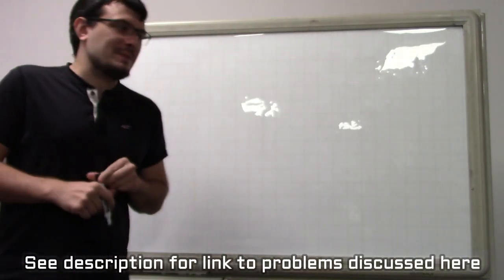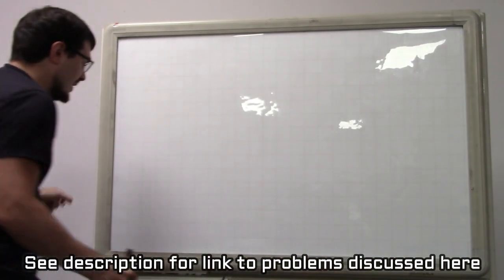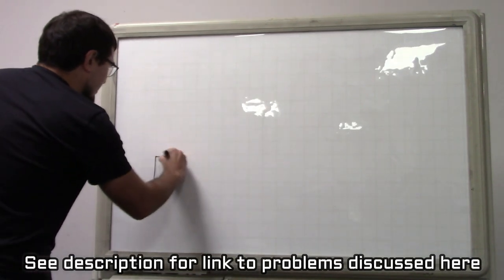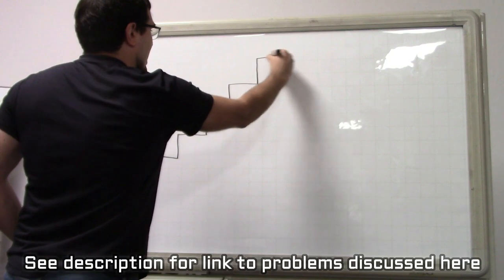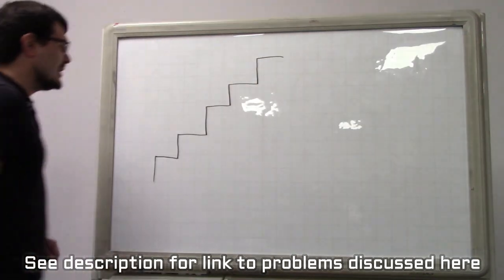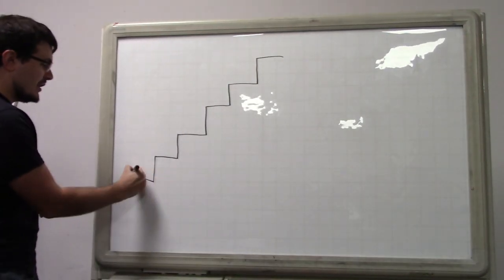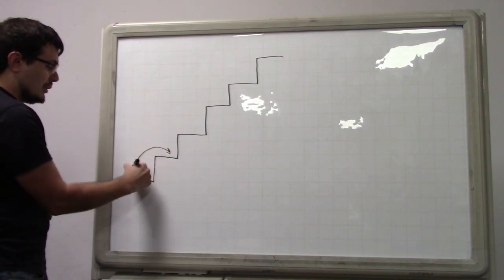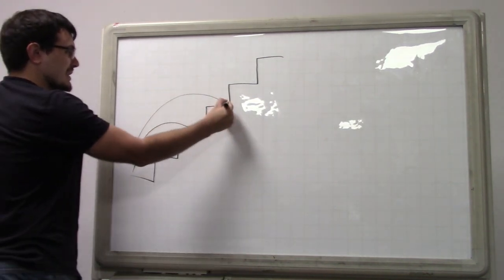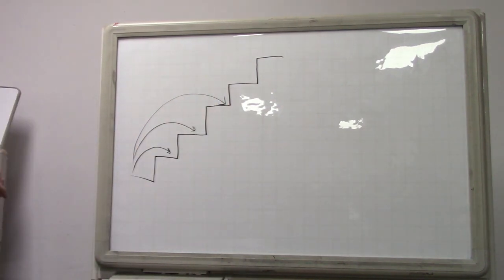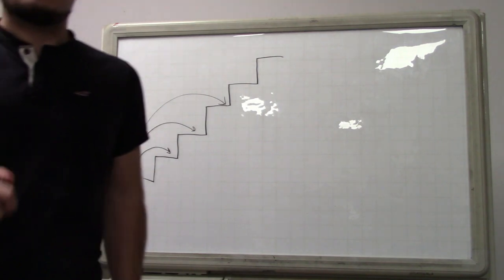The first problem is basically: there's a staircase, and you can climb it one step at a time, two steps at a time, or three steps at a time. The question is: in how many ways can you climb this staircase?